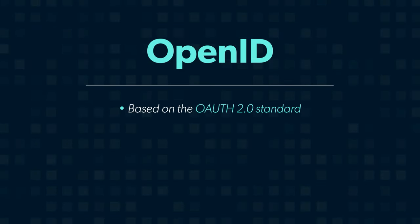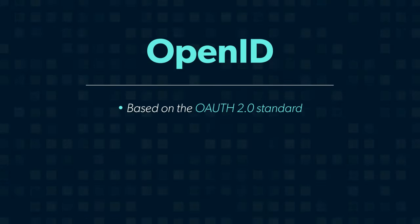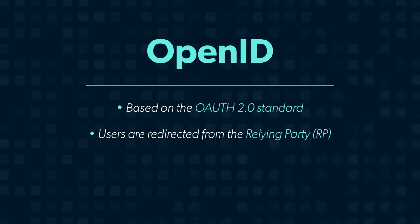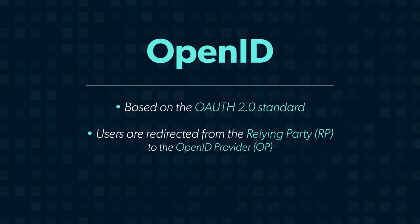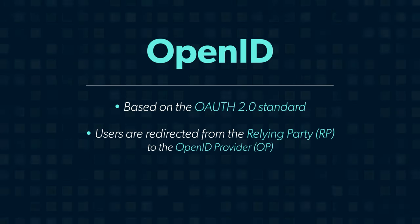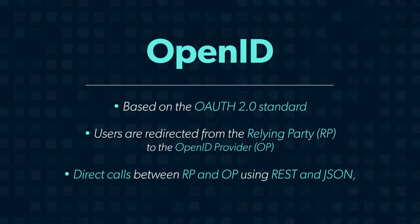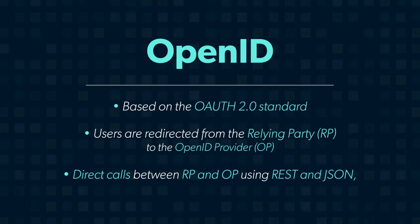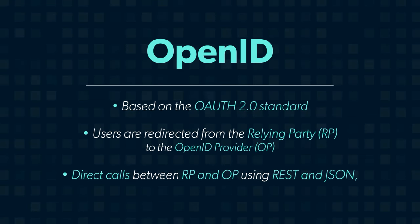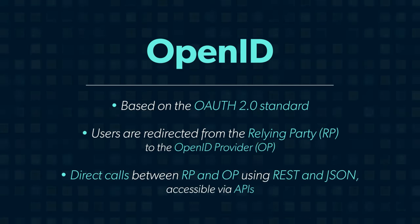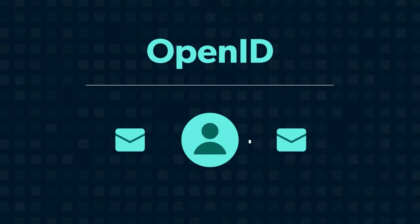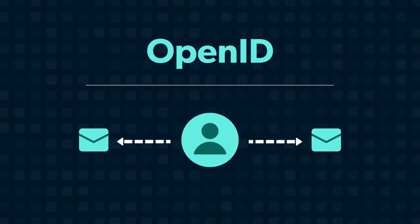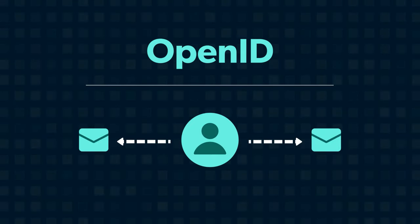OpenID is based on the OAuth 2.0 standard and works a bit differently. Users are redirected from the relying party, RP, to the OpenID provider, OP, as opposed to IDPs and SPs. There are direct calls between the RP and OP using REST and JSON message flows that are accessible using APIs. ID tokens transmit information, or claims, about the user versus it being contained in SAML's XML documents.